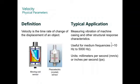Velocity is the time or rate of the change of the displacement of an object. There are two different sensors: moving coil sensor or piezoelectric or crystal sensor. Typical application is vibration of machine casing or other structural response. The useful frequency is 10 to 5000 hertz. For the moving coil, the maximum frequency is 1000 hertz. The measurement is millimeters per second or inches per second peak, also referred to as IPS.